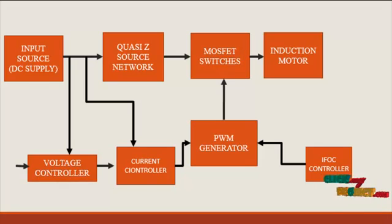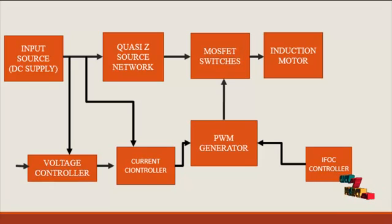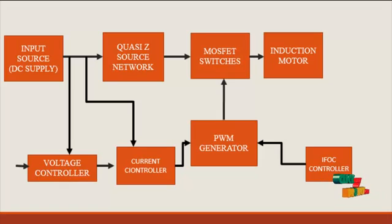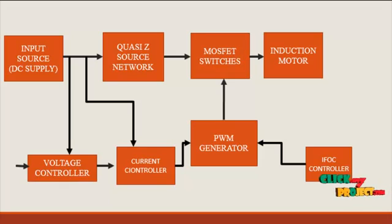Finally the PWM generator generates pulses for the 6 switches connected in the inverter section. Those switches deliver the triggering signal, and the output AC supply is then fed into the induction motor. The induction motor rating used here is 15 kilowatt. The traditional adjustable speed drive system is based on a VSI, which consists of a diode rectifier front end, DC link capacitor, and inverter bridge.